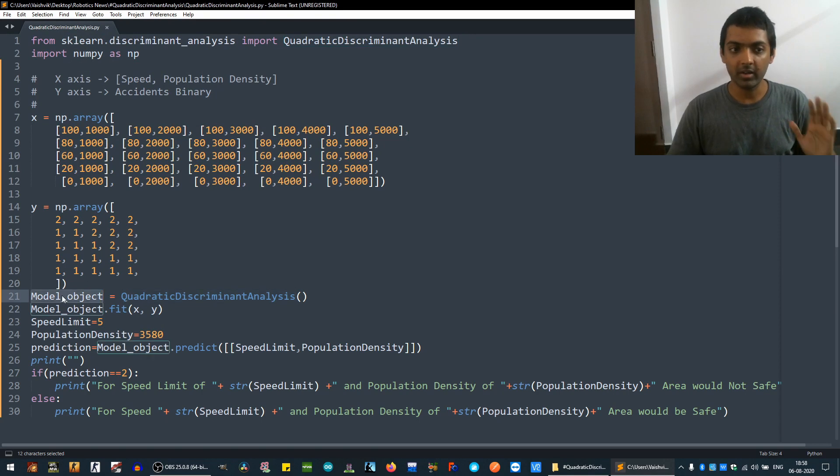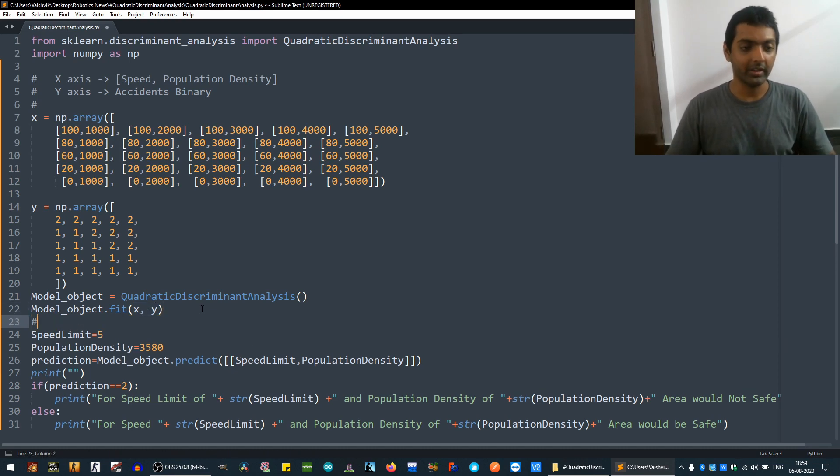We have a discriminant analysis model and we have X and Y data generated, and we created an object. Then we fit X and Y - X having speed limit and population density, Y having accident binary. When we fit, the machine has learned the model and our model is complete.